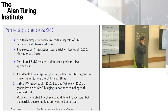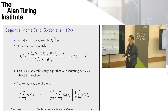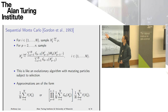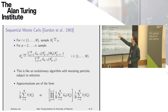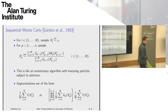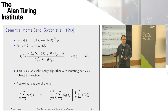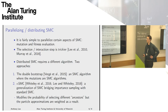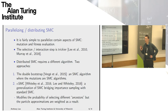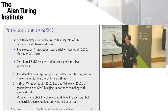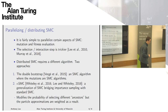It's fairly simple to parallelize certain aspects of SMC. If you need to compute G_{p-1} on a bunch of different random variables, you can compute them all in parallel. If you've chosen an ancestor, then you can imagine simulating from M in parallel for all ancestors — that's also quite trivial to parallelize. The bit that's not easy to parallelize is picking the ancestor — the selection interaction step is trickier. Anyone who looks at the algorithm will notice that's the harder part, even in parallel, and certainly even more so for distributed sequential Monte Carlo techniques.